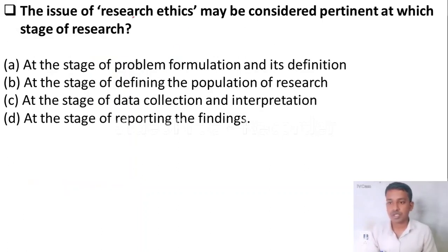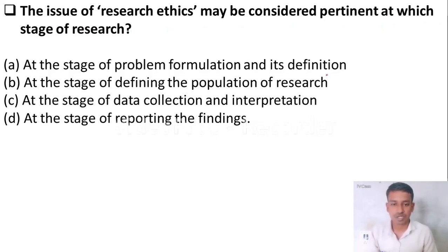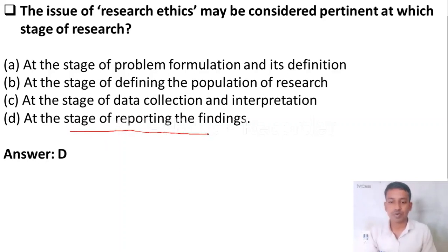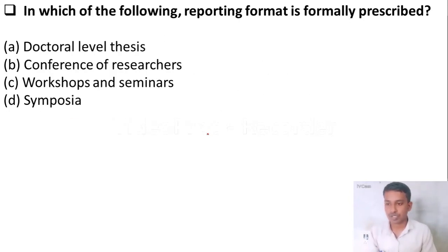The issue of research ethics may be considered pertinent at which stage of research? Option A: at the stage of problem formulation and its definition. Option B: at the stage of defining the population of research. Option C: at the stage of data collection and interpretation. Option D: at the stage of reporting the findings. The right answer is Option D — at the stage of reporting the findings.